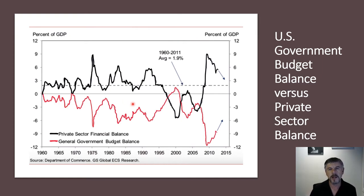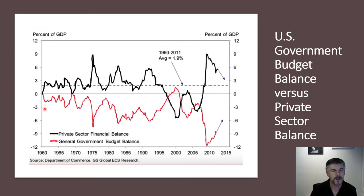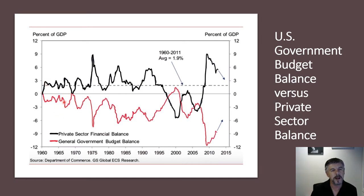Here is some data looking at the US government budget balance versus the private sector. I'm using US data because they are a fiat currency and run their economy the same way we do. On the chart, the government's budget balance is shown in red — when they're in red, they're spending more than they've taken in taxes, issuing government bonds and going into deficit. The private sector — people and businesses — is shown in black.